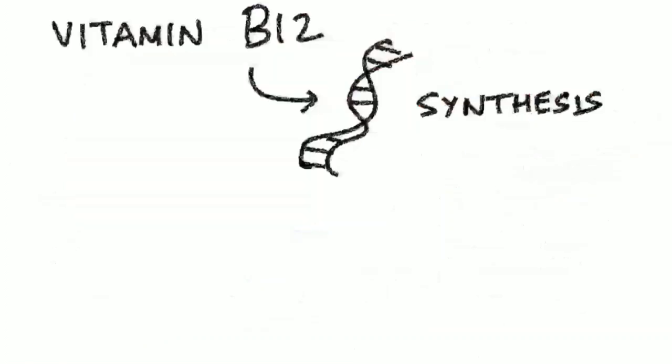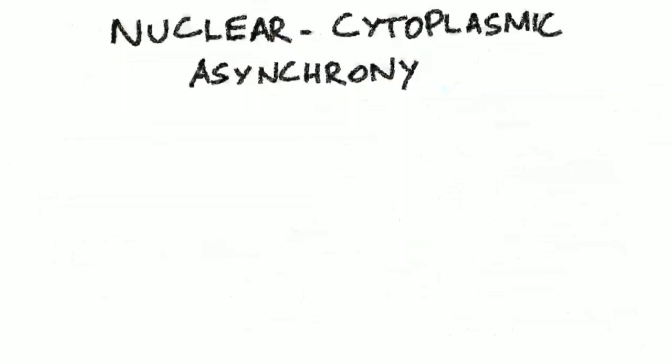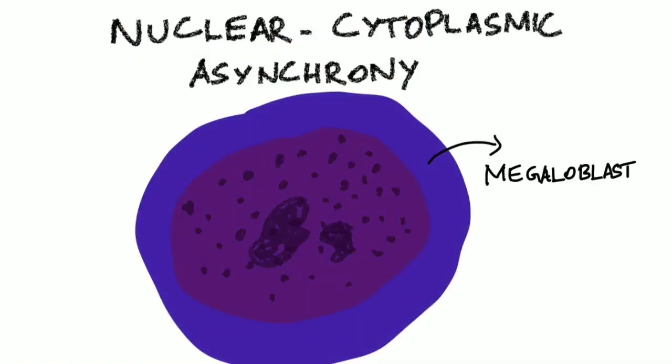Along with this, the patients will have beefy red tongue. Vitamin B12 is helpful in DNA synthesis. The deficiency of vitamin B12 leads to impaired DNA synthesis. This results in nuclear-cytoplasmic asynchrony. This is the reason for abnormally large-sized cytoplasm, which keeps growing compared to the normal size of the RBCs. This is the cause for the presence of abnormally large RBC precursor cells called megaloblasts in the bone marrow.